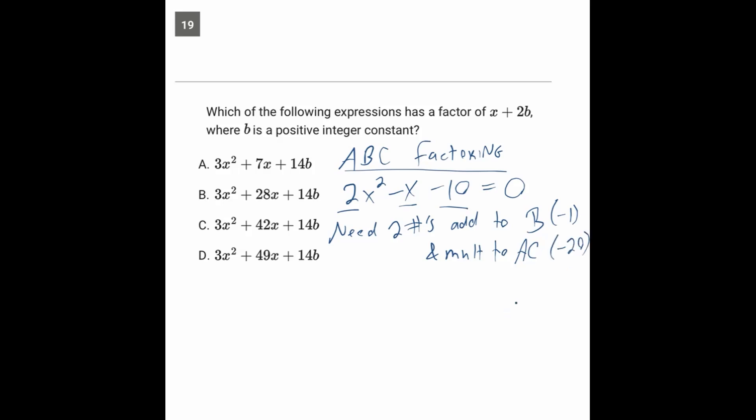So what two numbers add to negative 1 and multiply to negative 20? And the answer is negative 5 and 4. So next we split the middle term into those two terms. So we'll have 2x squared minus 5x plus 4x minus 10.